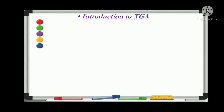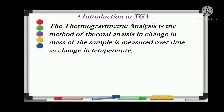Let's study in detail what is meant by thermogravimetric analysis. Generally, thermogravimetric analysis is a method of thermal analysis in which the change in mass or change in weight of the sample is measured over time at changing temperature. We can apply temperature to a sample in increasing or decreasing order and the change in weight of the sample is determined using this TGA technique.